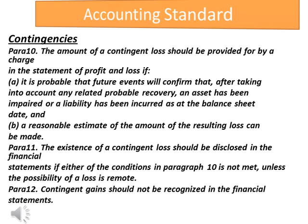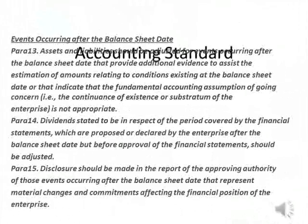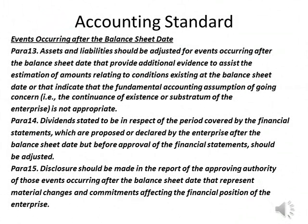Paras 12: Contingent gains should not be recognized in the financial statements. Events Occurring After the Balance Sheet Date. Paras 13: Assets and liabilities should be adjusted for events occurring after the balance sheet date that provide additional evidence to assist the estimation of amounts relating to conditions existing at the balance sheet date, or that indicate that the fundamental accounting assumption of going concern — i.e., the continuance of existence or substratum of the enterprise — is not appropriate.